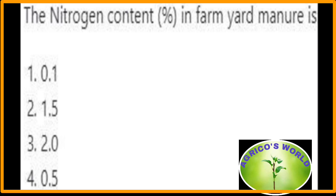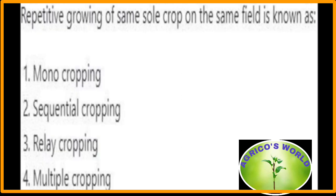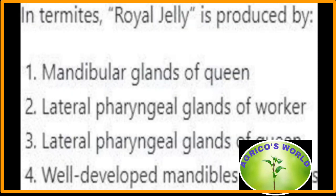The nitrogen content in farm yard manure (FYM) is 0.5 percent. Repetitive growing of the same sole crop on the same field is known as monocropping. In termites, royal jelly is produced by the lateral pharyngeal glands of workers.